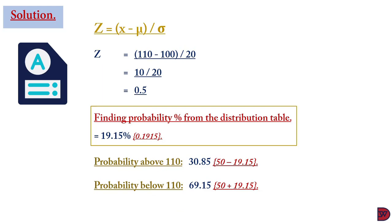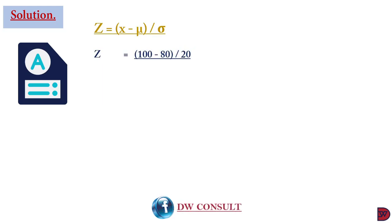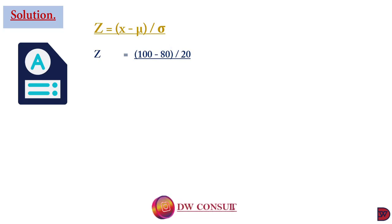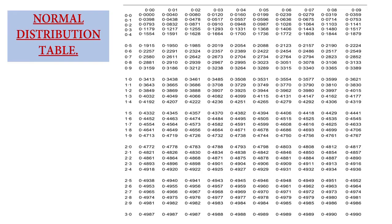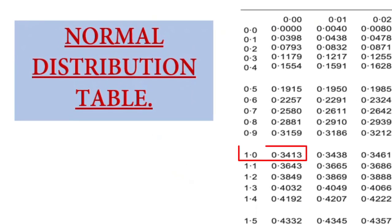For sales of $80, the z-score is: z = (100 − 80) / 20, because 80 is smaller than 100 we reverse it. That gives 20 / 20 = 1. Looking up z = 1 on the distribution table gives 0.3413.